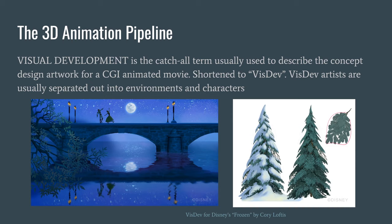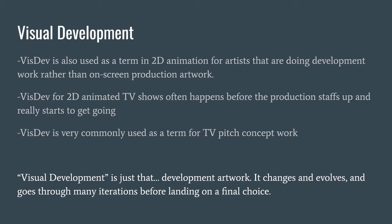In 3D animation, visual development — or visdev — is the catch-all term for concept design artwork for a CGI animated movie. Visdev artists are usually separated into environments and characters, each team specializing in their area. Whether for 2D or 3D, visdev is development artwork — it changes, evolves, and goes through many iterations before landing on a final choice, unlike the final painted backgrounds seen on screen in a 2D show.